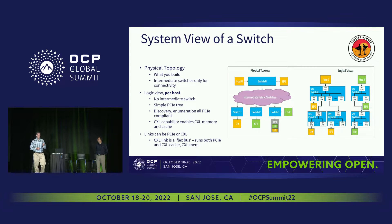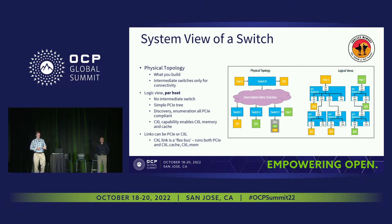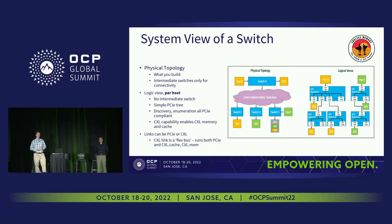One of the key things in CXL is that the link comes up as a Flexbus link. It has two protocols running at the same time: PCI Express, called CXL.io, and CXL cache mem. The CXL cache mem allows memory semantics and coherency on the same wire. CXL provides a standard for multi-host and peer-to-peer across a non-tree topology — something PCIe never had as an industry standard.